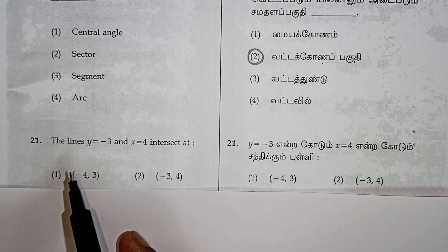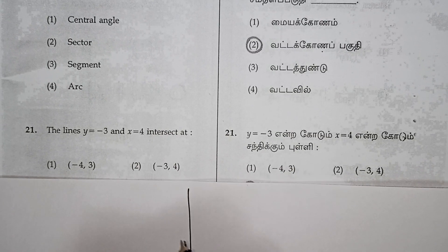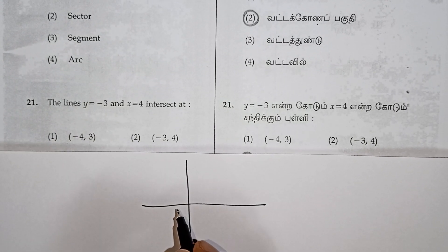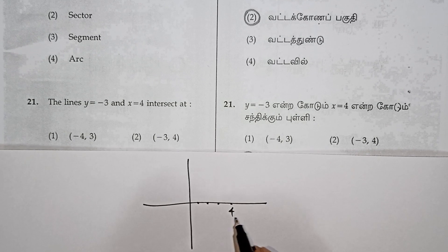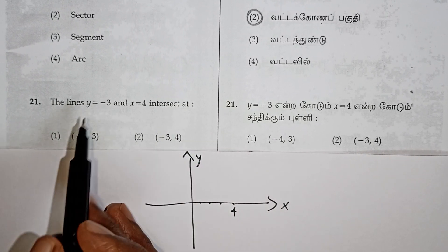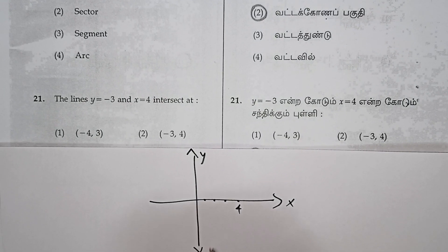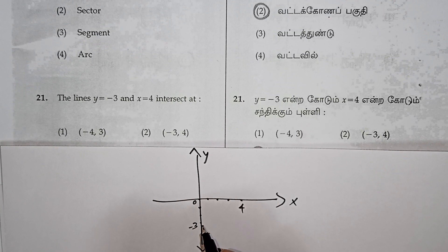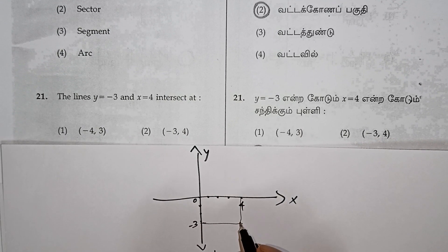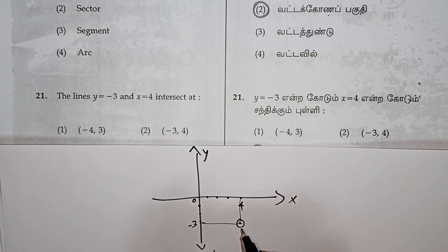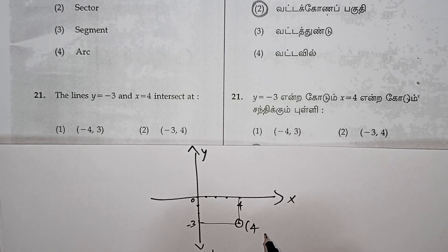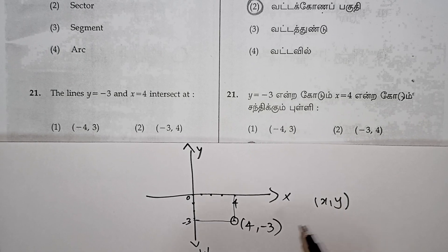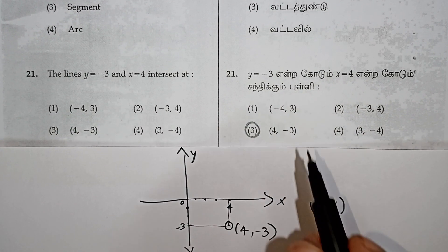Next, the lines Y is equal to minus 3 and X is equal to 4 — where do they intersect? X is equal to 4 on the X axis: 1, 2, 3, 4. Y is equal to minus 3 on the Y axis: minus 1, minus 2, minus 3. You can see these 2 points. The intersection point is minus 3 and 4, so the coordinate is (4, minus 3). That is the third option and is correct.